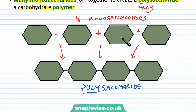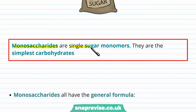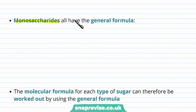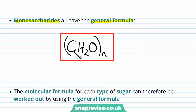Monosaccharides have particular properties as individual units. They're soluble, so they can dissolve, and they're sweet-tasting carbohydrates, so they're also commonly known as sugars. By definition, monosaccharides are single sugar monomers — the simplest carbohydrates; you cannot get smaller. They have their own general formula: (CH₂O)n. This formula means you have a certain number of carbon atoms and a certain number of oxygen atoms, but twice the number of hydrogen atoms. So for N=3, you'd have three carbons, three oxygens, and six hydrogens.